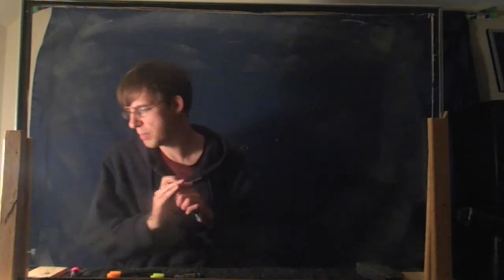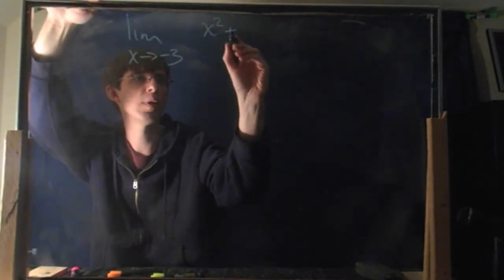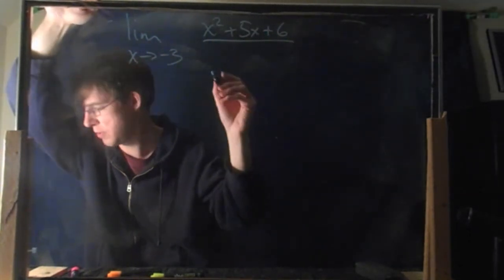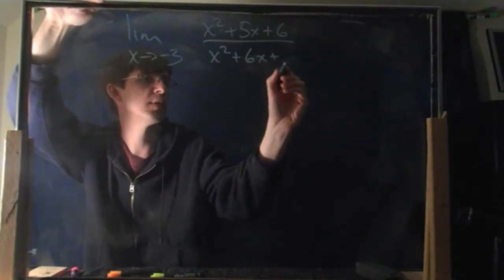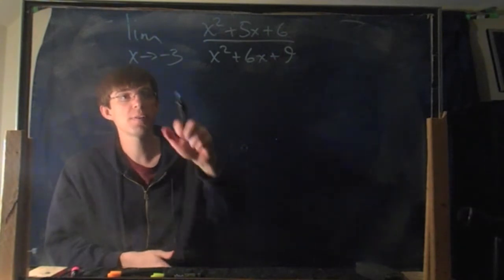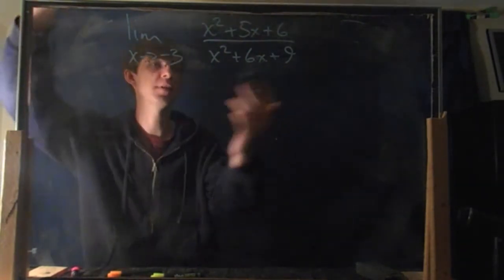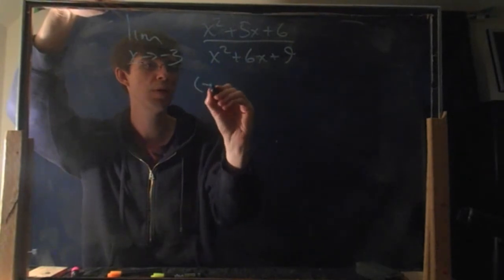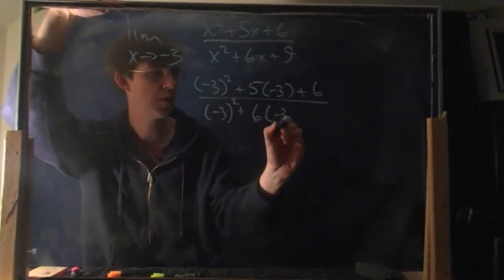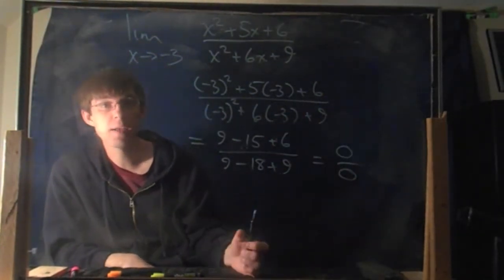Let's try a couple more examples. How about the limit as x goes to negative 3 of (x² + 5x + 6) divided by (x² + 6x + 9)? As before, the first thing you should try is just plugging in negative 3. If you get a real number as the answer, then that's the answer and you're done. But let's try it: plugging in minus 3 gives... zero over zero. That means we have to go back and do more work.